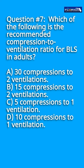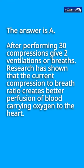Question number 7: Which of the following is the recommended compression to ventilation ratio for BLS in adults? A. 30 compressions to 2 ventilations. B. 15 compressions to 2 ventilations. C. 5 compressions to 1 ventilation. D. 10 compressions to 1 ventilation. The answer is A. After performing 30 compressions, give 2 ventilations or breaths. Research has shown that the current compression to breath ratio creates better perfusion of blood carrying oxygen to the heart.